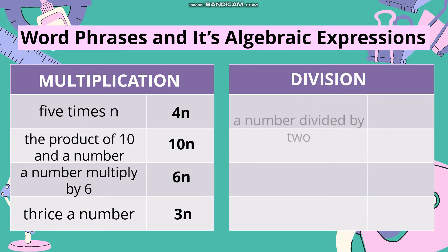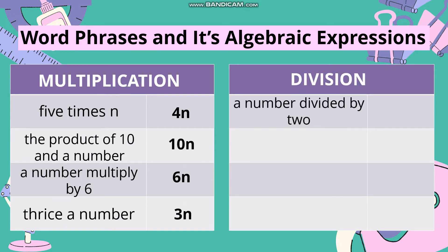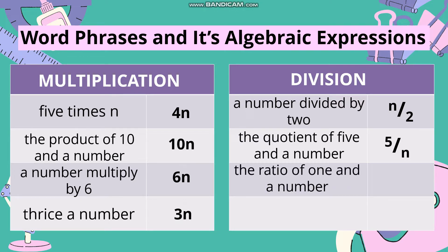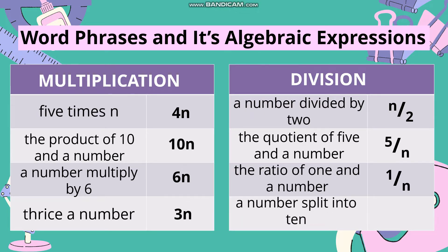Division: 'A number divided by 2' in mathematical symbol is n over 2. 'The quotient of 5 and a number' in mathematical symbol is 5 over n. 'The ratio of 1 and a number' in mathematical symbol is 1 over n. 'A number split into 10' in mathematical symbol is n over 10.